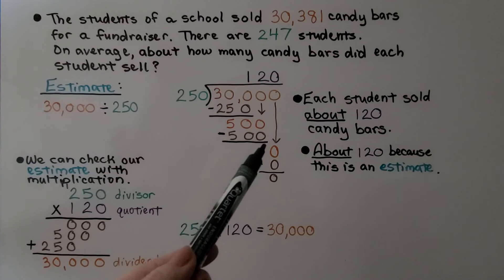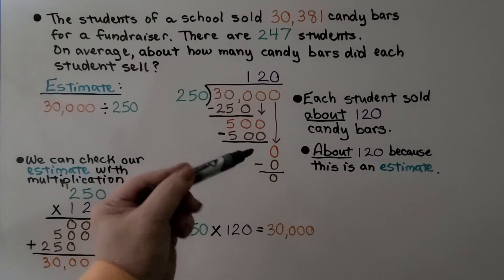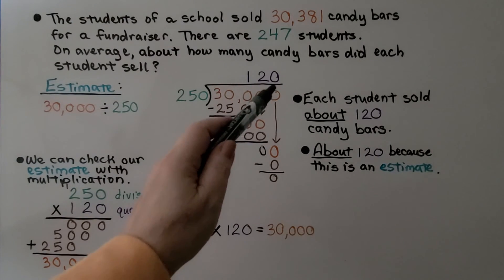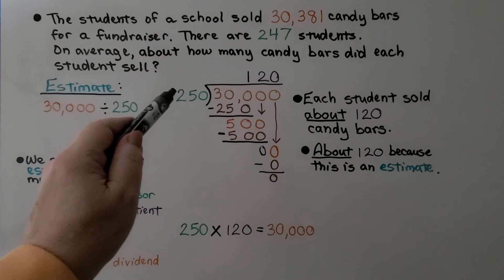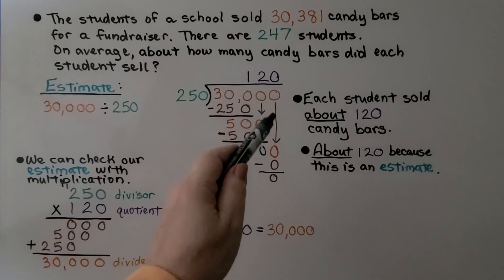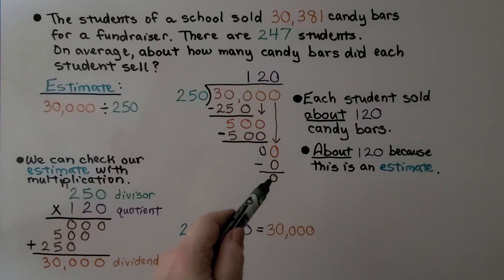2 times. So, we put a 2 above the 0 that we dropped down, and 2 times 250 is 500. We subtract it and get a 0, and now it's this 0's turn to come down. Actually, I could put a 0 here, can't I? It's this 0's turn to come down, and we ask ourselves, how many times can 250 fit into 0? 0. So, we put a 0 above the 0 we drop down. We subtract and get a 0 again.